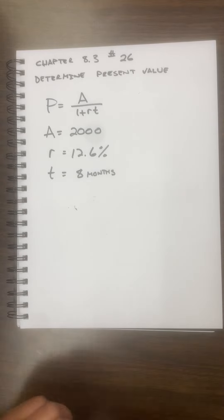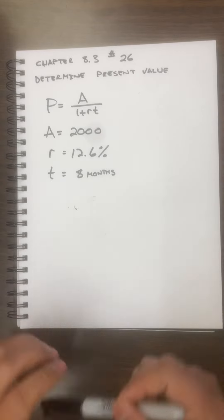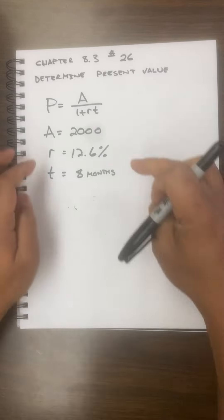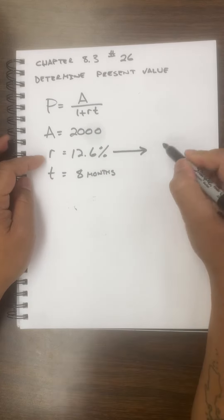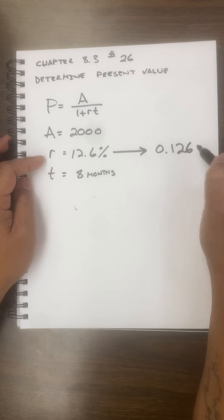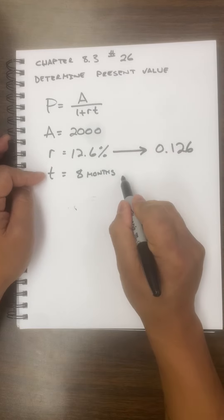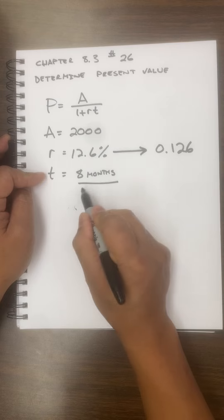They gave us all the information: A equals 2000 dollars, the rate is 12.6 percent. I'm going to convert that to a decimal, 0.126. The time of eight months, I'm going to divide